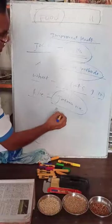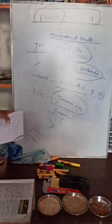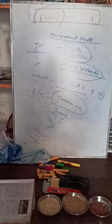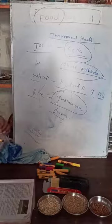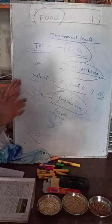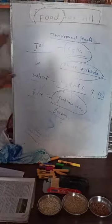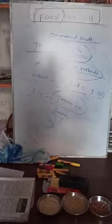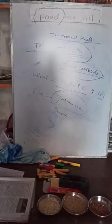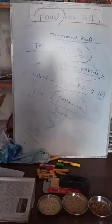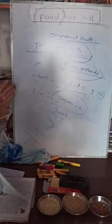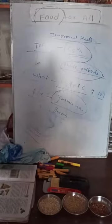Basmati rice is also an improved seed variety — we eat basmati rice and it is an improved variety. There are many more improved seeds; I have written only some examples. Today we studied the modern methods of agriculture: improved seeds, modern methods of irrigation, and fertilizers — these three concepts. The remaining portions we will see tomorrow. Thank you.